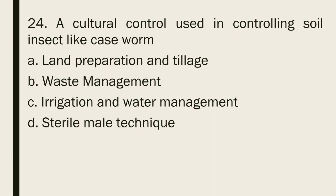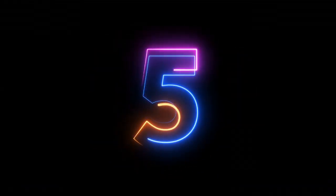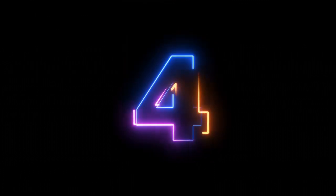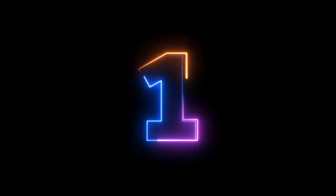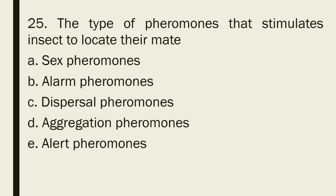Question 24: A cultural control used in controlling soil insects like caseworm: a. Land preparation and tillage b. Waste management c. Irrigation and water management d. Sterile male technique. The correct answer is letter c, irrigation and water management.